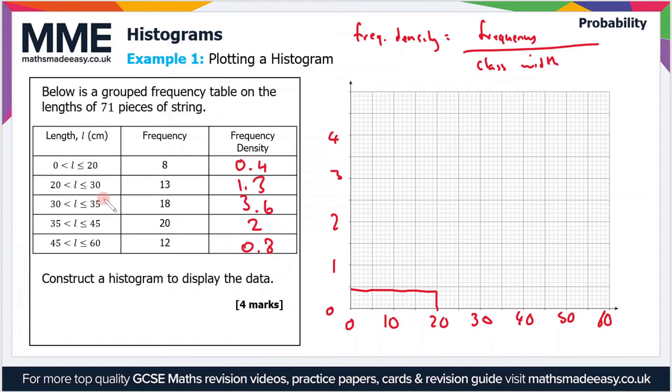The second bar is from 20 to 30, and that's a frequency density of 1.2. So that's from the bar on the left to 30, and then up to 1.2, and then draw the bar across.